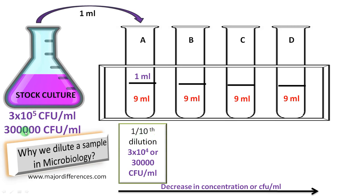What we did is dilute the sample 10 times — that is a 1/10 dilution. That brings 300,000 CFU per ml down to 30,000 CFU per ml, or 3 × 10⁴. Mix well and transfer 1 ml to the next test tube, test tube B.